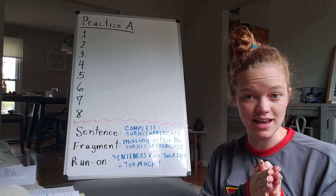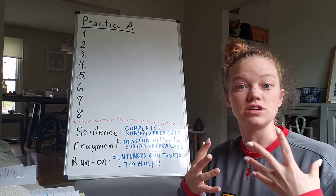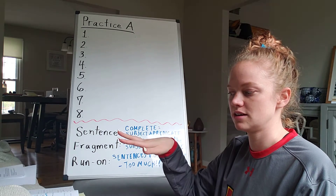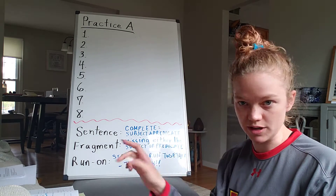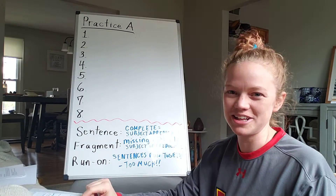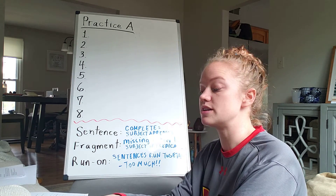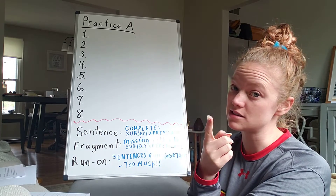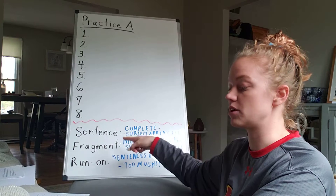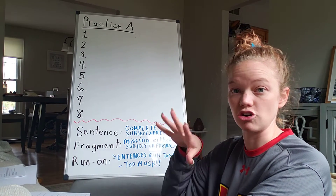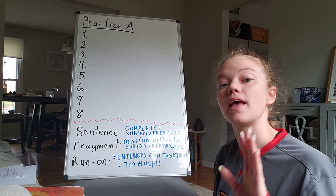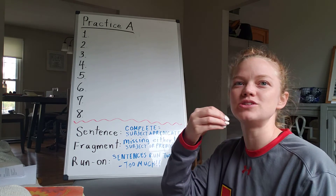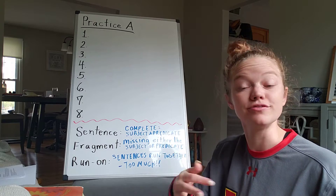So right now I'm going to go through practice A with you just to review that idea and give you some examples so that when you are doing practice B you can look back at practice A and the answers and see some of those examples. How we'd usually do it would be that you would read the group of words — because not all of them are going to be sentences — and then circle sentence, fragment, or run-on to describe that group of words. Reading it out loud can help with this because once you say it out loud, you'll recognize that something's off if there's something off.